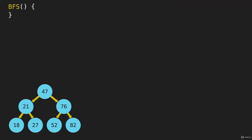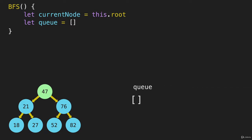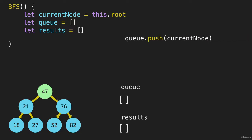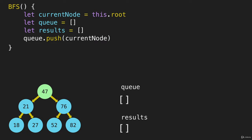We'll say breadth first search, and we will need a variable for whatever the current node is that we're popping off of that array that we talked about in the last video. We're gonna set that equal to the root to begin with, and we're gonna need our queue array and our results array. Before we get into that loop, we need to push the current node — which is the root — into the queue. We're pushing the entire node with the value and left and right into that queue, represented here as a blue number so we can remember that it's actually the entire node.